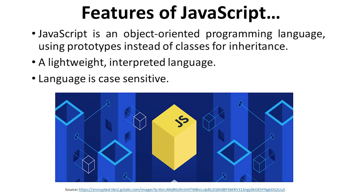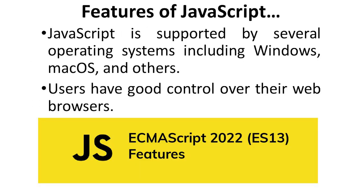JavaScript is an object-oriented programming language that uses prototypes instead of classes for inheritance. It is a lightweight and interpreted language — not compiled — which is why it is very lightweight. This language is case sensitive, so the prescribed cases must always be followed. JavaScript is supported by several operating systems including Windows, Mac OS, and others, giving users good control over their web browsers.